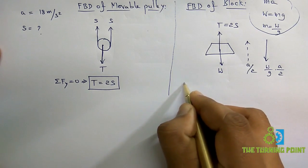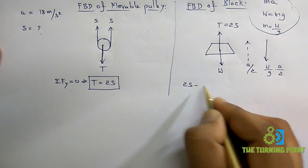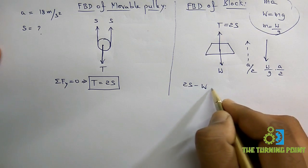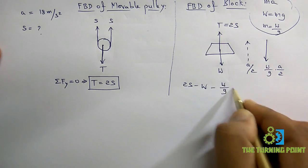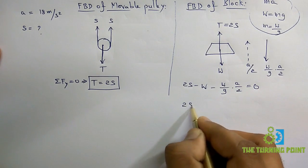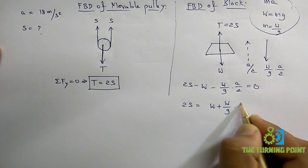Applying sigma Fy equals 0: 2S acting vertically upwards, so positive value, minus W vertically downwards, and this is also acting vertically downwards. From that 2S equals W plus W by g into a by 2.